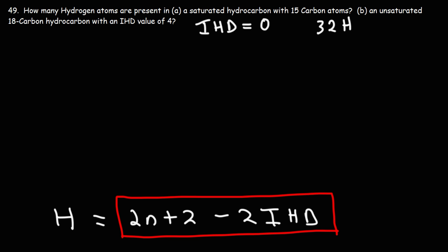Now what about part B? How many hydrogen atoms are present in an unsaturated 18-carbon hydrocarbon with an IHD value of 4? So the fact that we're dealing with a hydrocarbon means that there's only hydrogen and carbon. We don't have nitrogen, we don't have bromine, oxygen, anything like that. Just carbon and hydrogen.